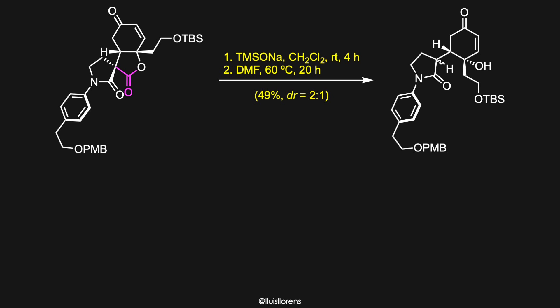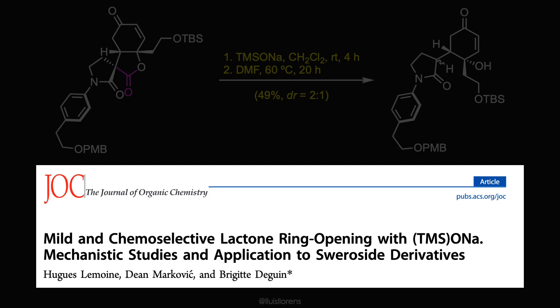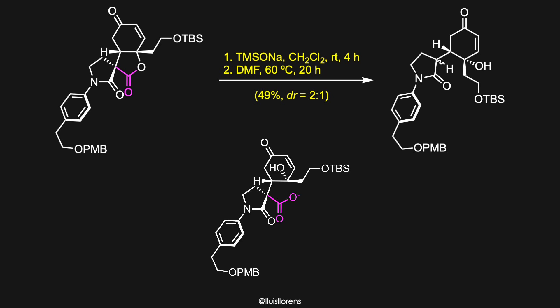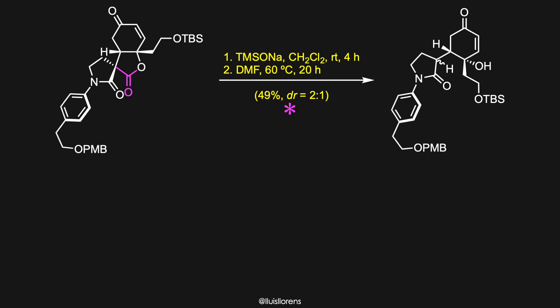The next step was to perform the chemoselective hydrolysis of the lactone moiety in the presence of the neighboring lactam. Hydrolysis using potassium hydroxide in ethanol showed little discrimination for the lactone. After further investigation, the authors found that trimethylsilanoate showed remarkable reactivity for the lactone cleavage, even in the presence of the diffuse lactam. The desired product was then obtained following telescoped thermal decarboxylation of the intermediate, in 49% yield as an inconsequential 2:1 mixture of diastereomers.